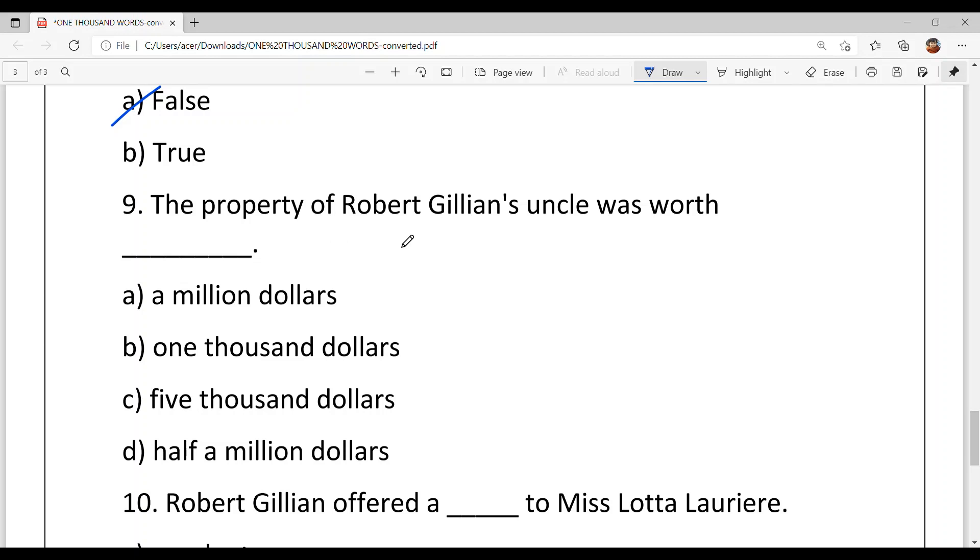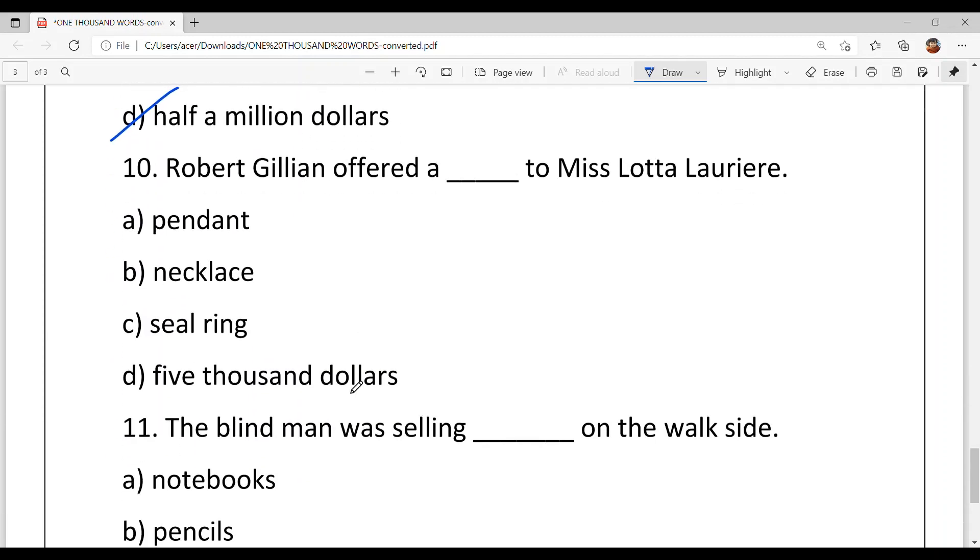Ninth, the property of Robert Gillian's uncle was worth dash. What was the actual amount? What was its worth? Option A, a million dollars. Option B, $1,000. Option C, $5,000. Option D, half a million dollars. And option D is your answer, half a million dollars.